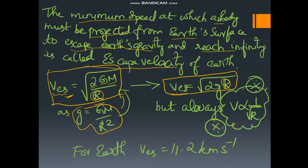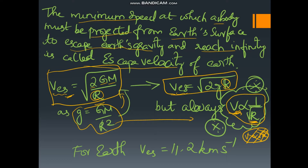In numericals, you must remember that v_escape is always inversely proportional to the square root of r. You should use the original formula only, and not the derived form, since v is always inversely proportional to root r — this is a very important point.